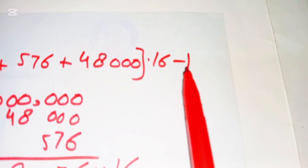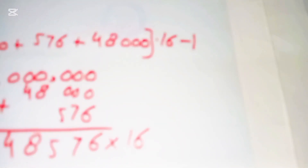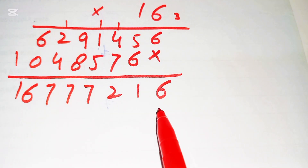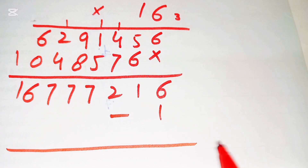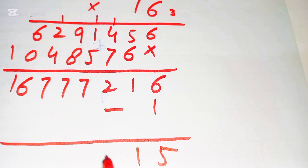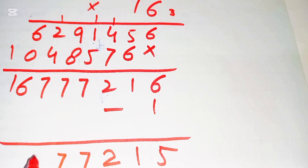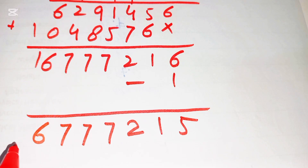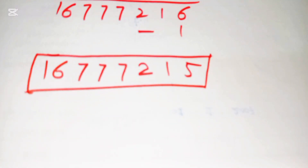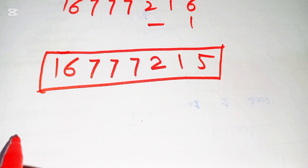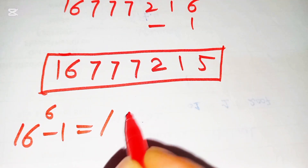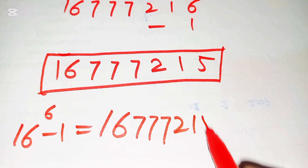Now here we subtract 1: 16,777,216 minus 1 is 16,777,215. And now here it is our final answer. The final answer of 16 to the power of 6 minus 1 is equal to 16,777,215.